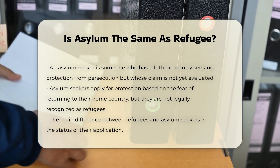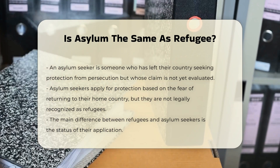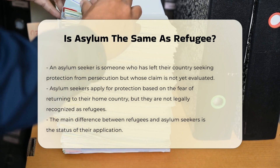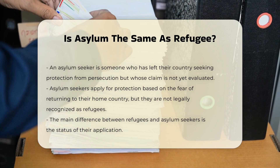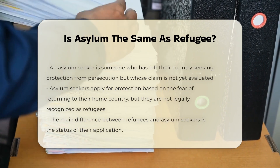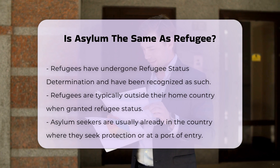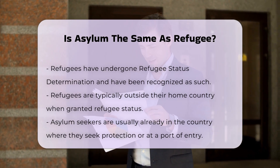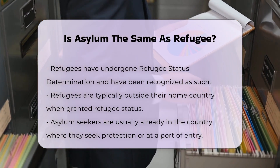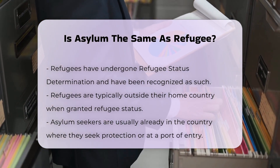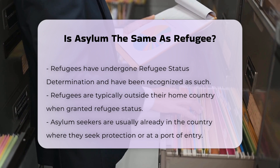Key differences. The primary difference between a refugee and an asylum seeker lies in the status of their application. A refugee has already been recognized as such through a legal process known as Refugee Status Determination (RSD), whereas an asylum seeker is still in the process of having their claim evaluated. Refugees are typically outside their home country when they are granted refugee status, while asylum seekers are usually already in the country where they are seeking protection or are at a port of entry.